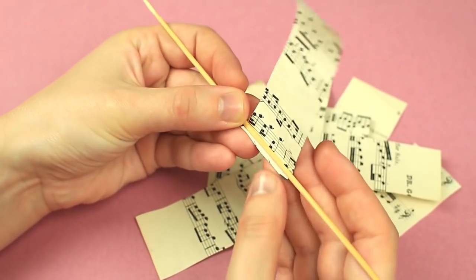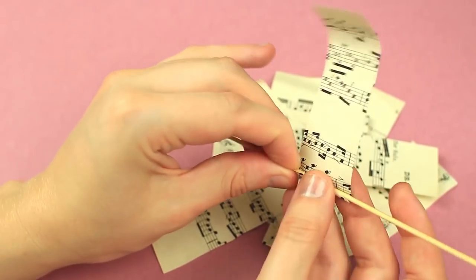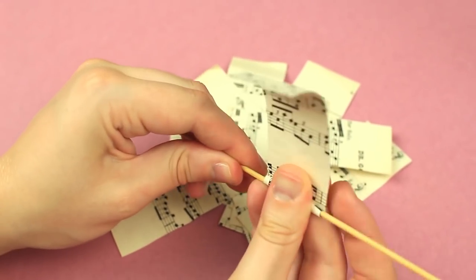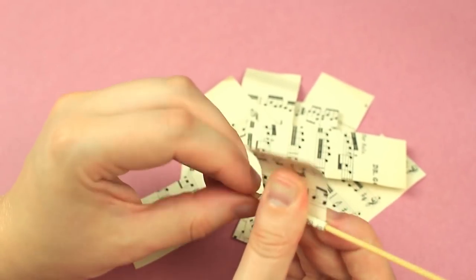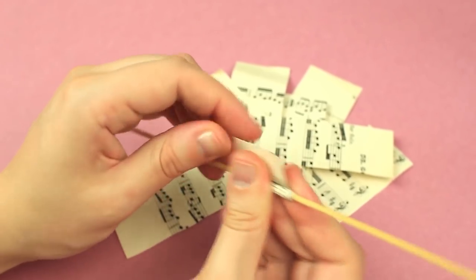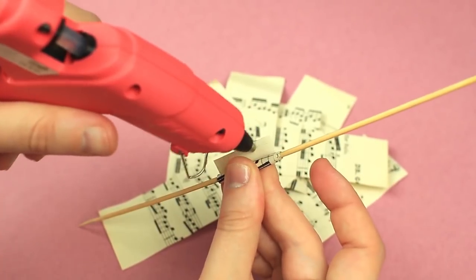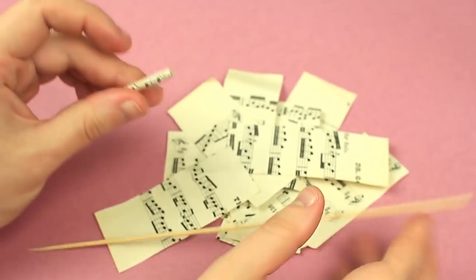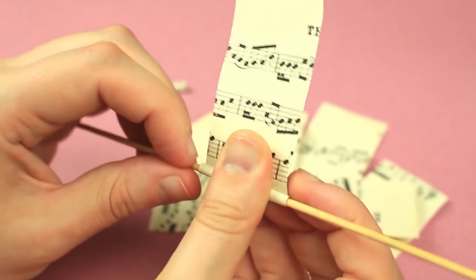Let's prepare paper beads. Roll a paper strip onto a stick. Make the roll tight to look neat. Hot glue the end.